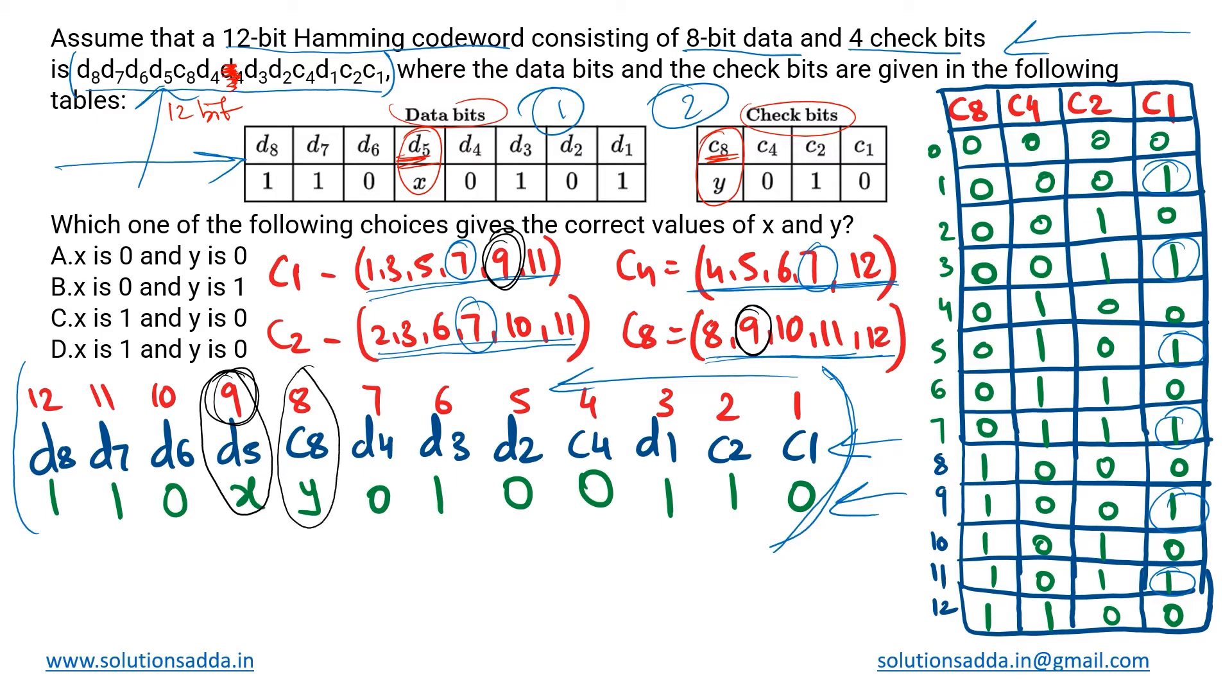As we can see, 9 is present only in c1 and c8. Similarly for y, it is at position 8. Now this 8 is present only in c8. So we are sure that if we ensure even parity because of the check bits c1 and c8, we will be able to identify the values of x and y both.